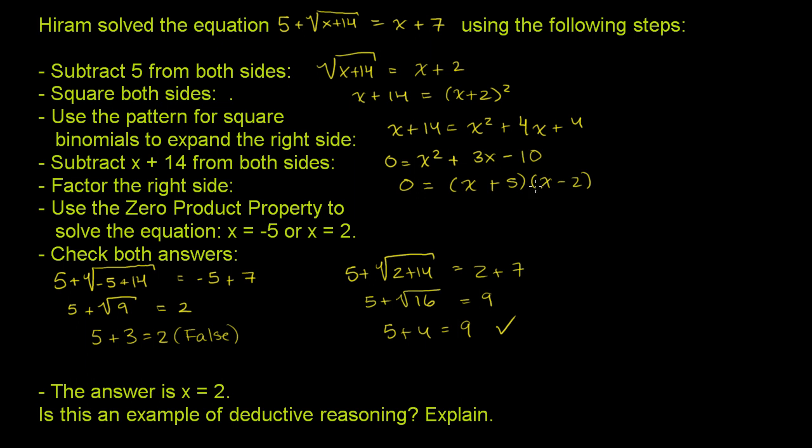So that means x plus 5 is equal to 0, or x minus 2 is equal to 0. And so if x plus 5 is equal to 0, that's x is equal to negative 5. x minus 2 is 0, that's x is equal to 2.